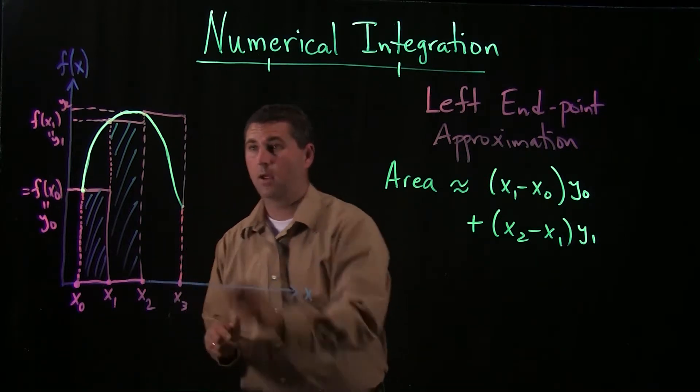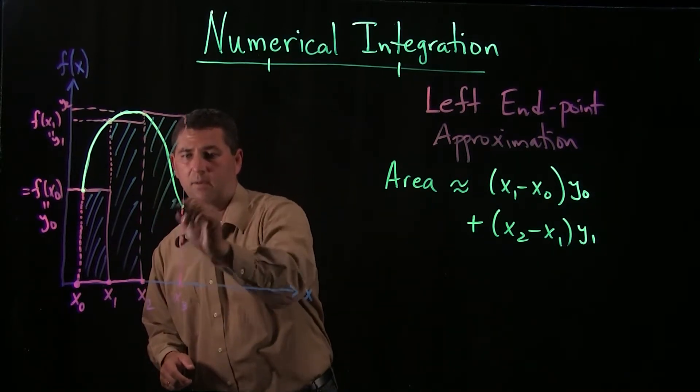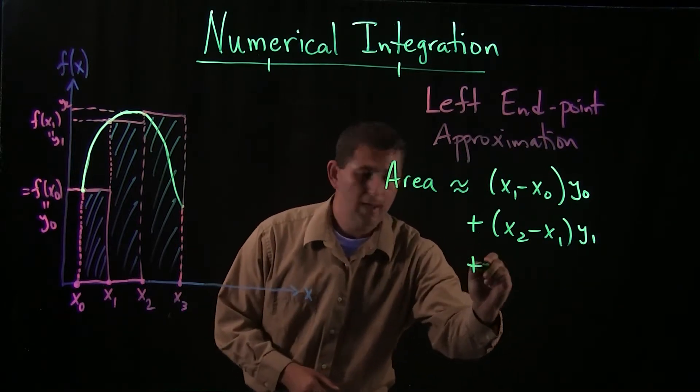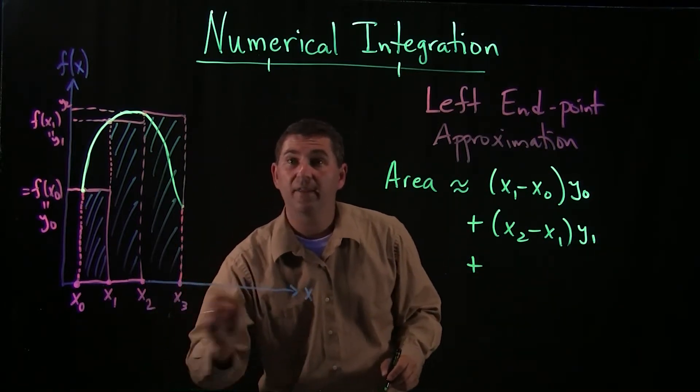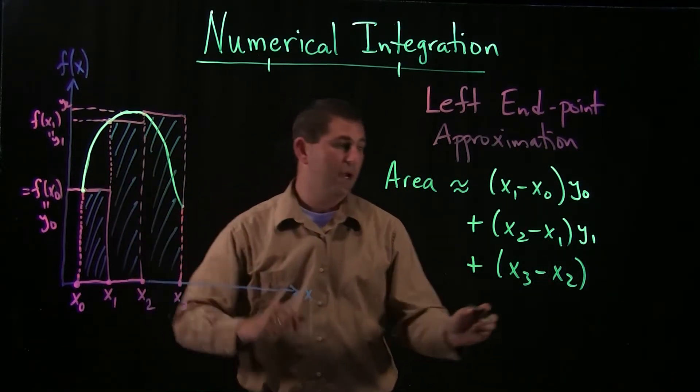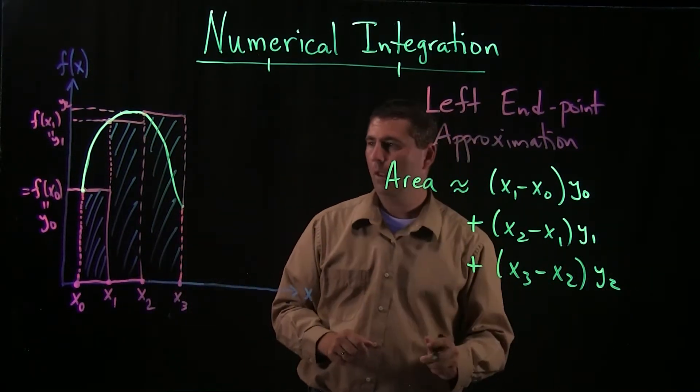And now I draw a rectangle over here to x3. I get some more area, and I can add that up over here. Again, the base has length x3 minus x2. And the height, well, that was our y2.